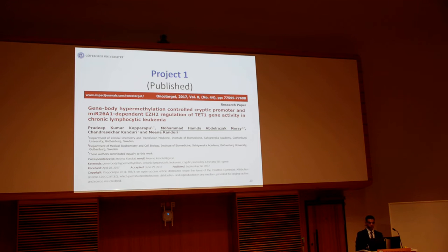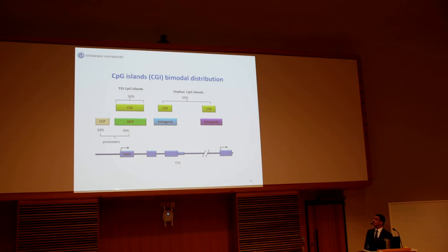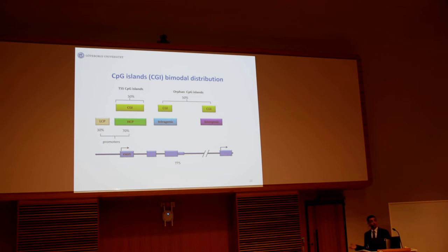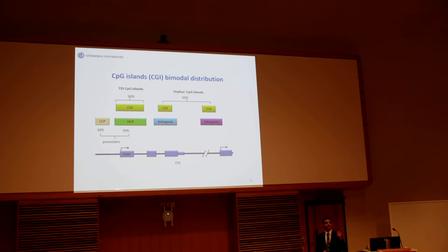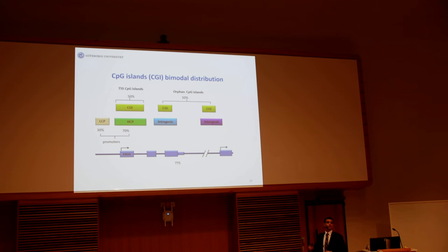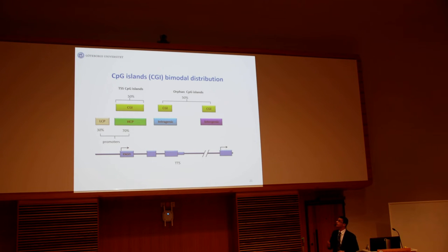This is my first project: gene body hypermethylation controls cryptic antisense transcription of TET1, dependent on EZH2 regulation, in CLL. I'm showing here the distribution patterns of the CpG islands across the human genome. As you can see, they show bimodal distribution. With this bimodal distribution, one might think that DNA methylation within these different locations might influence gene expression control in a different manner. We all know that hypermethylation at CpG islands at the promoter region is always associated with silencing, but that is not necessarily the same when it comes to orphan CpG islands, which could be in intragenic or intergenic regions.